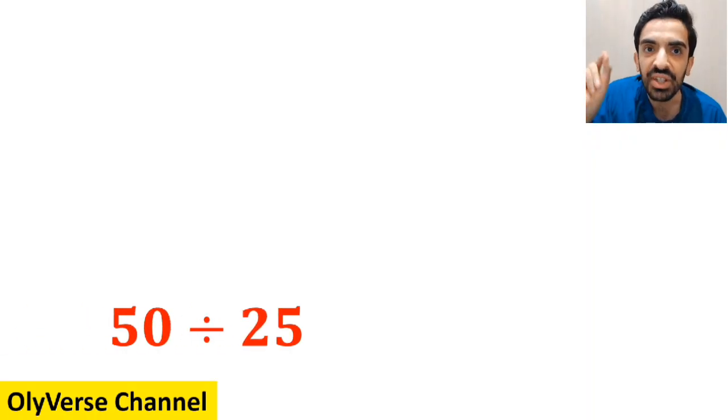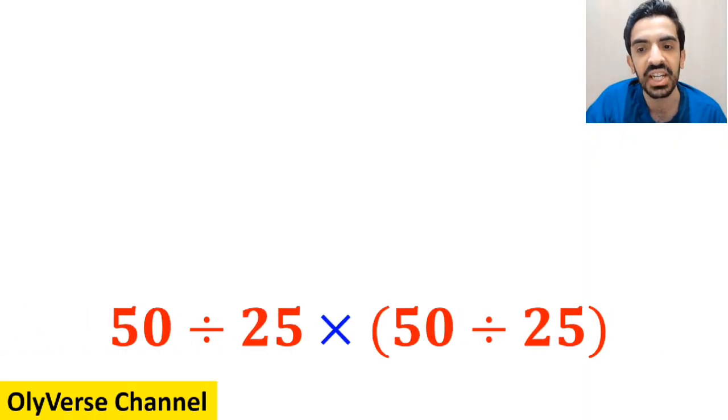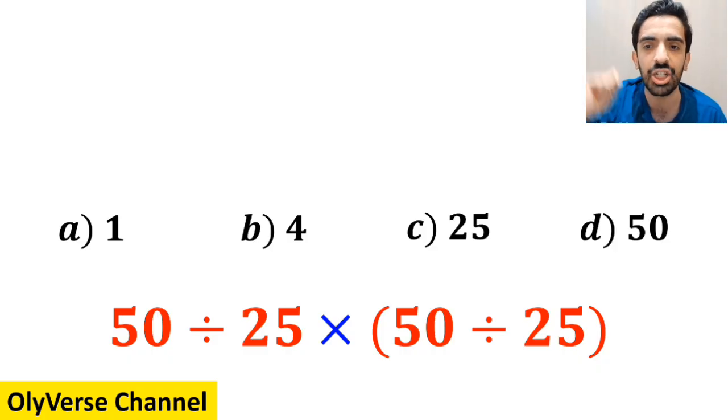What is the value of the expression 50 divided by 25 then times open parenthesis 50 divided by 25 close parenthesis? Which option do you think is the correct answer to this question?